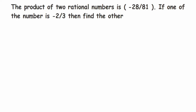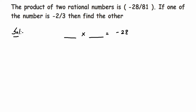Hey everyone, here's a question from rational numbers. The product of two rational numbers is minus 28 by 81. If one of the numbers is minus 2 by 3, then find the other. So they have given the product of two rational numbers — that means multiplication. When they multiplied two different rational numbers they got the answer as minus 28 by 81. One number is minus 2 by 3, and we have to find out the other. Let's take the first number to be minus 2 by 3.